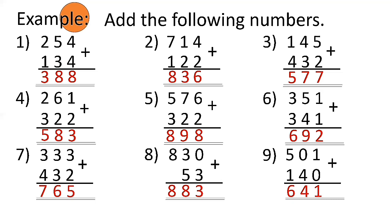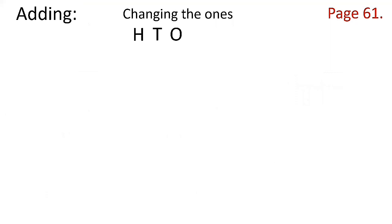Okay, next example: adding with changing the ones. This time we have to change. Let's count the ones: 1, 2, 3, 4, 5, 6, 7 — so how many ones are in the ones place? There are 7 ones.